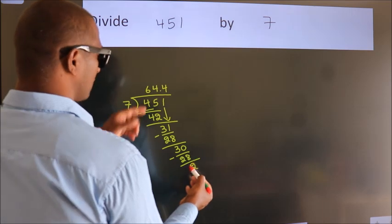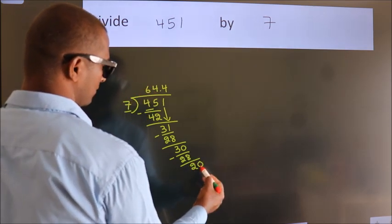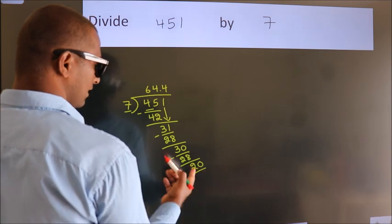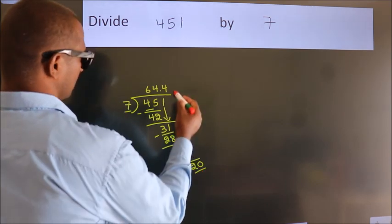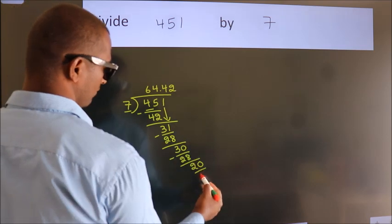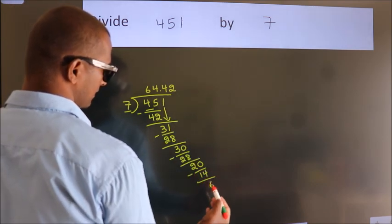After this, we already have the decimal, so directly take 0. So, 20. A number close to 20 in the 7 table is 7 times 2 equals 14. Now we subtract. We get 6.